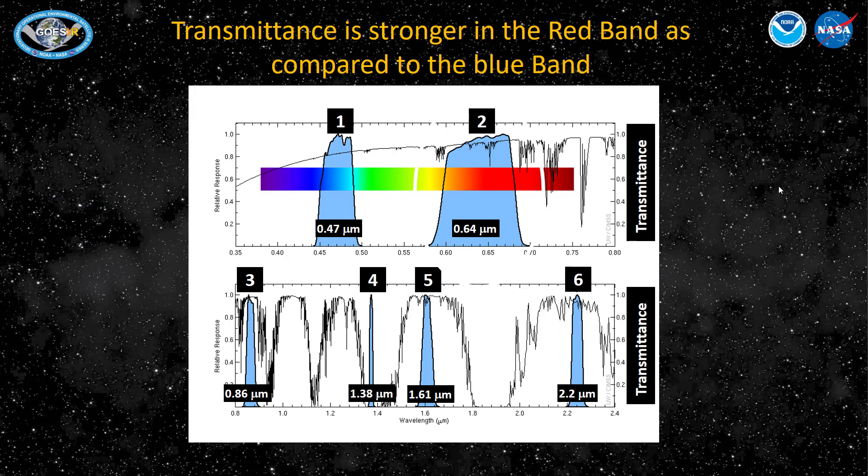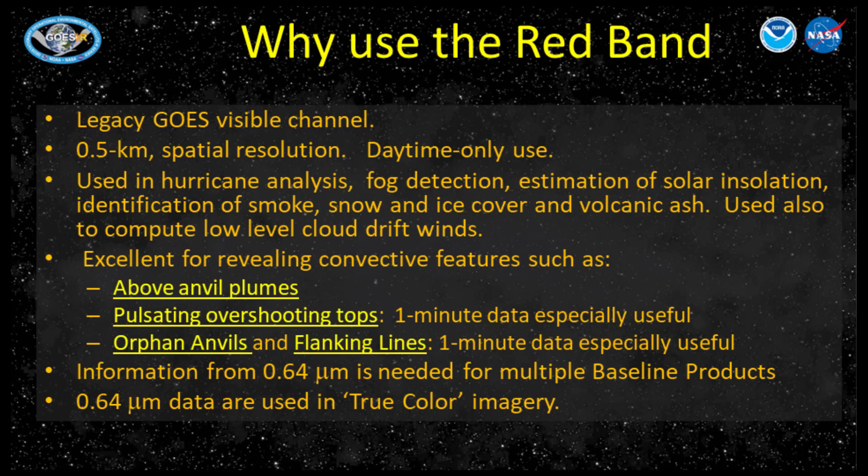The black line is transmittance in the atmosphere. We're focusing in this training on bands 2 and 5. The 0.64 micrometer, or red visible band, is the primary band used to identify features in the visible, and it's a legacy channel that extends GOES observations at visible wavelengths. It has the finest spatial resolution of all ABI bands.